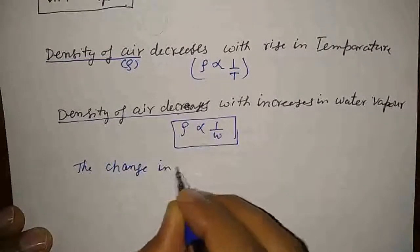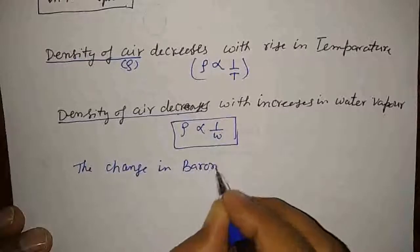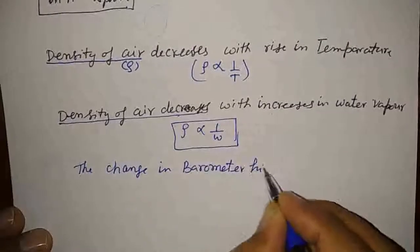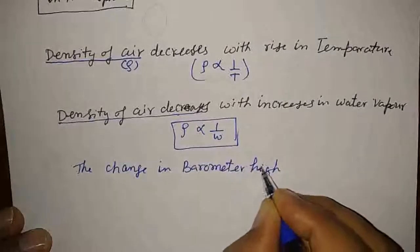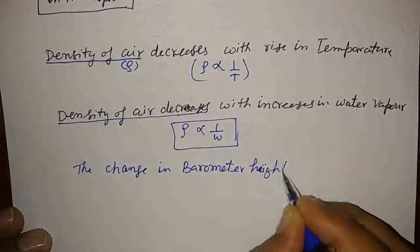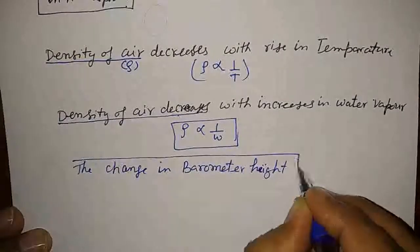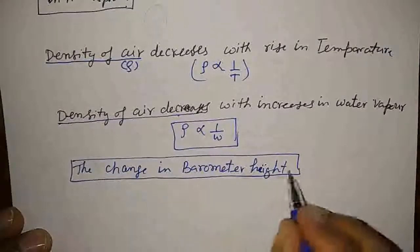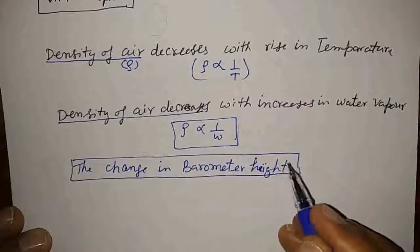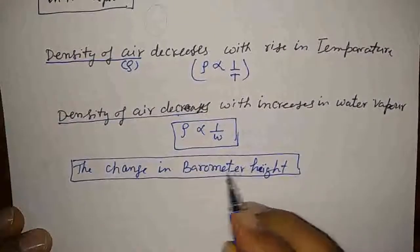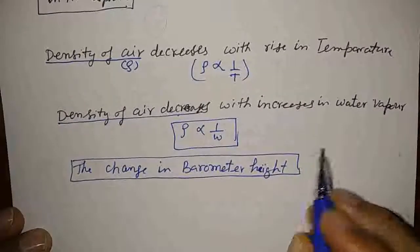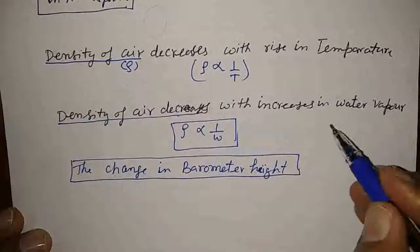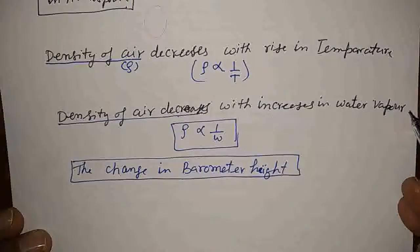Change in barometric height means change in atmospheric pressure — either due to change in temperature or due to change in the water vapor component. This change in barometric height helps us to predict the weather.